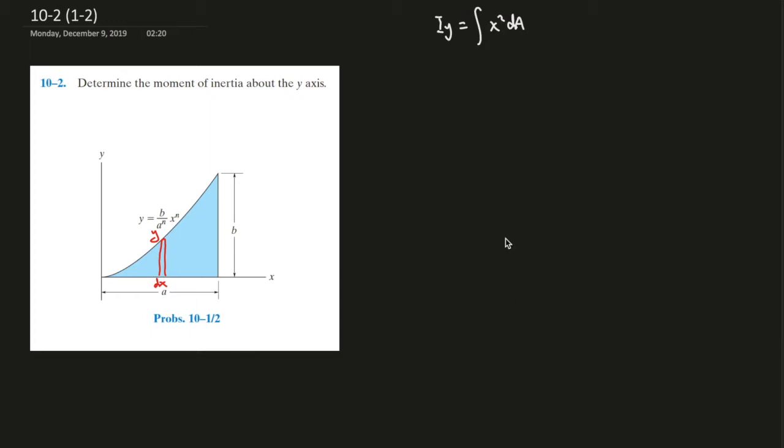It says determine the moment of inertia about the y-axis. So we'll do the y-axis. It would be the x squared times dA. And look over here, how do we find dA? It's dx times y for one of those infinitely small base triangles and we sum them up. That's why we're doing integral.